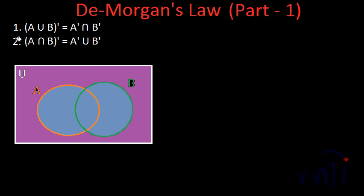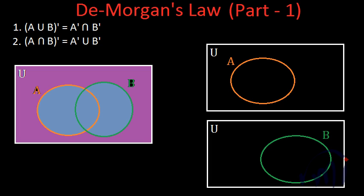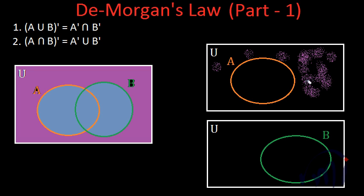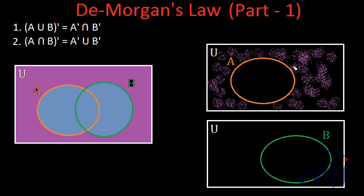This is the left part of the first rule. To understand it better, let me draw two more pictures. In the first picture we have the universal set and set A, and in the second picture we have the universal set and set B. The orange circle represents set A, and the area representing A complement — that is, A dash — will be this area outside set A but inside the universal set.